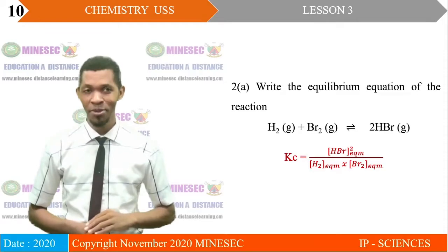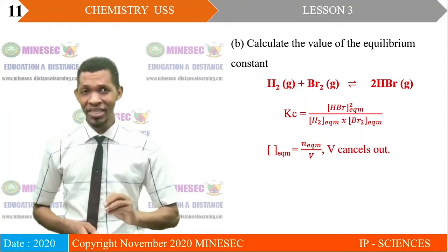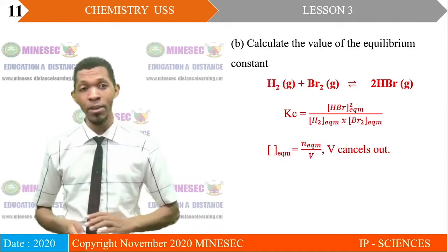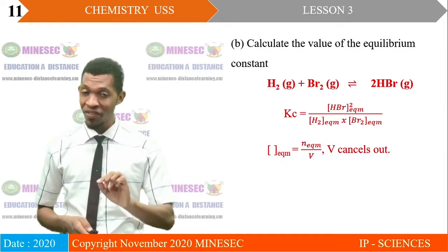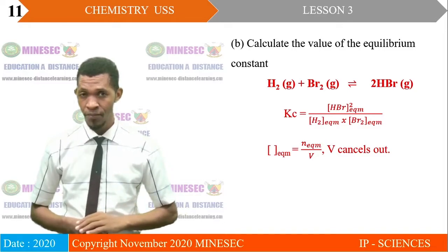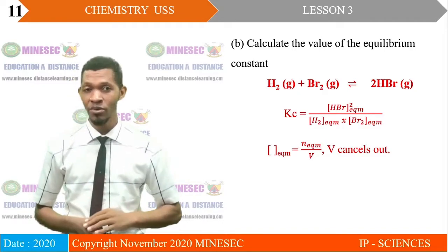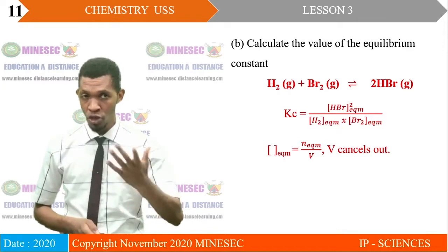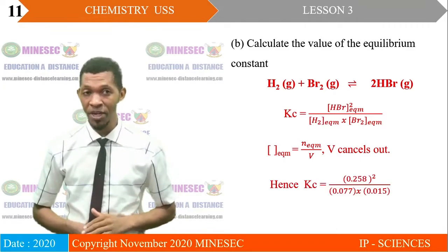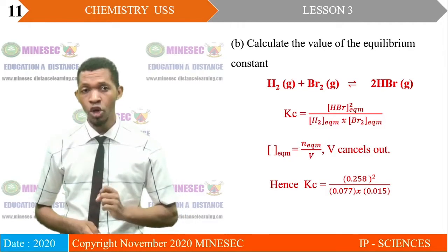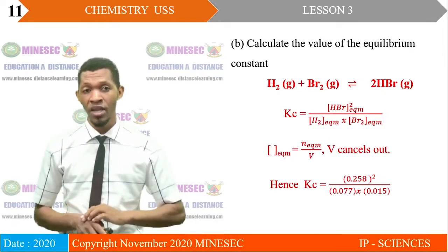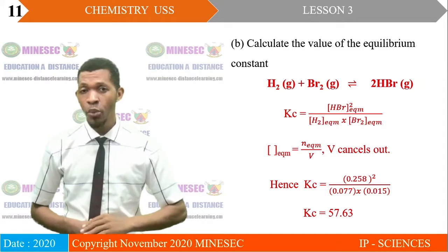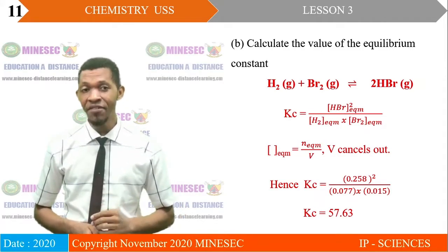Part B: calculate the value of the equilibrium constant. The molar concentration of each species at equilibrium can be gotten by dividing the number of moles of that species at equilibrium by the volume. In this question the volume will cancel out, because the number of moles of product molecules is the same as the number of moles of reactant molecules. Substituting the number of moles, Kc = (0.258)² / (0.077 × 0.015). Simplifying, Kc = 57.6.